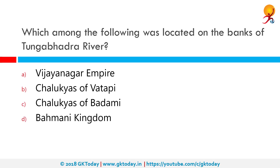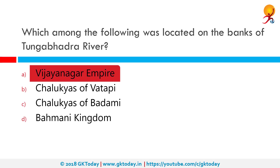Which among the following was located on the banks of the Tungabhadra river? The correct answer is Vijayanagar. Harihara I and Bukka I in the year 1336 established the Vijayanagar Empire on the banks of the river Tungabhadra.